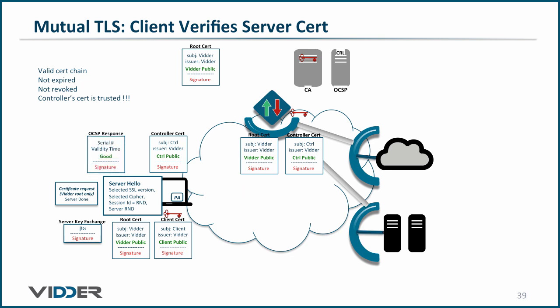Next, it checks to make sure the Diffie-Hellman composite number is valid by checking the hash values of the message. Given that they are equal, it now has the controller's Diffie-Hellman composite number.